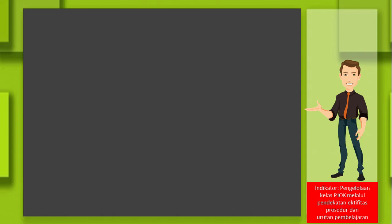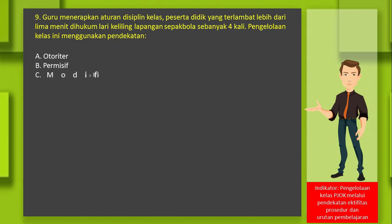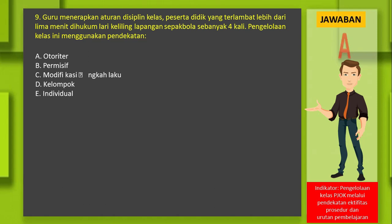Indikator berikutnya: pengelolaan kelas melalui pendekatan aktivitas, prosedur, dan urutan pembelajaran. Soal nomor 9: guru menerapkan aturan disiplin kelas, peserta didik yang terlambat lebih dari 5 menit dihukum lari keliling lapangan sepak bola sebanyak 4 kali. Pengelolaan kelas ini menggunakan pendekatan: A. Otoriter, B. Permisif, C. Modifikasi tingkah laku, D. Kelompok, E. Individual. Jawabannya adalah A: Otoriter.